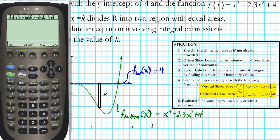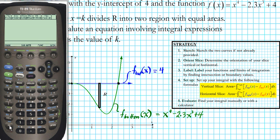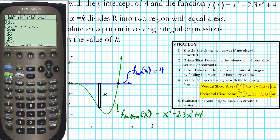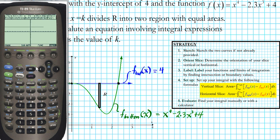I'm going to walk you through how to find the intersection of these two curves using the TI-89 Titanium graphing calculator — one of the best calculators you can use. We'll enter the two functions: the first function is y = 4, and the second function is x⁴ − 2.3x³ + 4. Then we press Diamond + F3 to generate the graph.